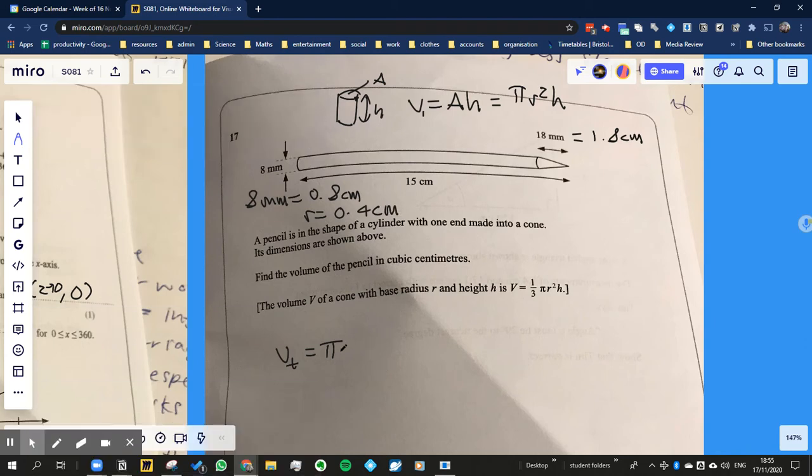So volume is going to be equal to π times 0.4² times the height, or the length in this case, so times 15. We'll put brackets around that for now and we'll add it to the volume of the cylinder at the end.